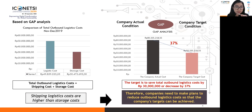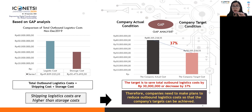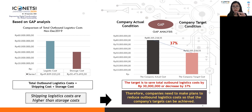Based on gap analysis, there is a comparison of total outbound logistics cost from November to December 2019. Total outbound logistics cost consists of shipping cost and storage cost, but shipping cost and logistics cost are higher than storage cost. The company's target condition for total outbound logistics cost is around 50 million rupiah, but the actual condition is around 80 million rupiah. Therefore, the company needs to make plans to reduce outbound logistics costs so that the company target can be achieved.